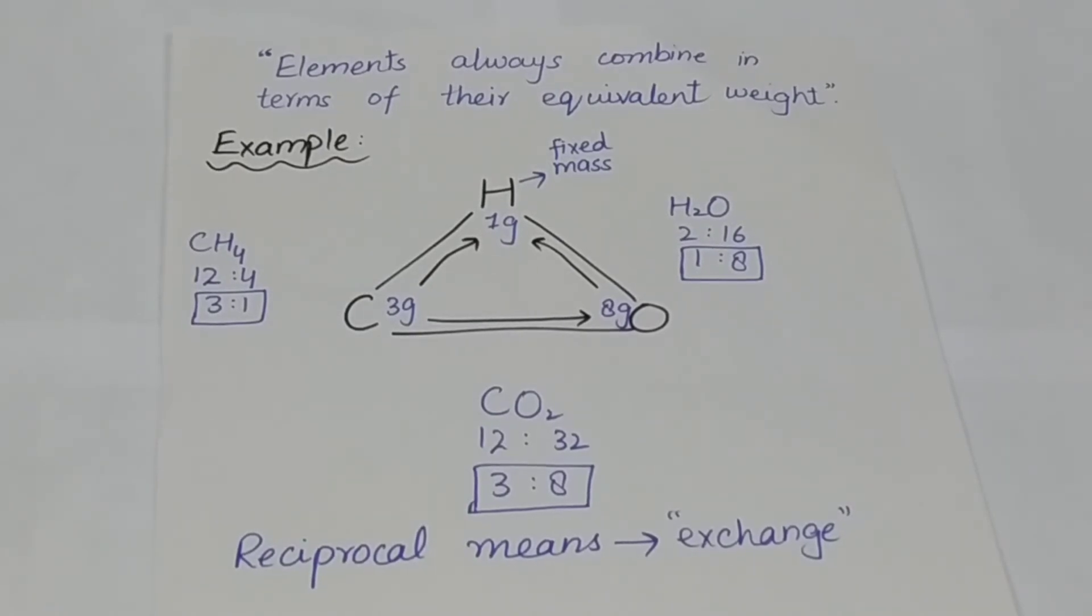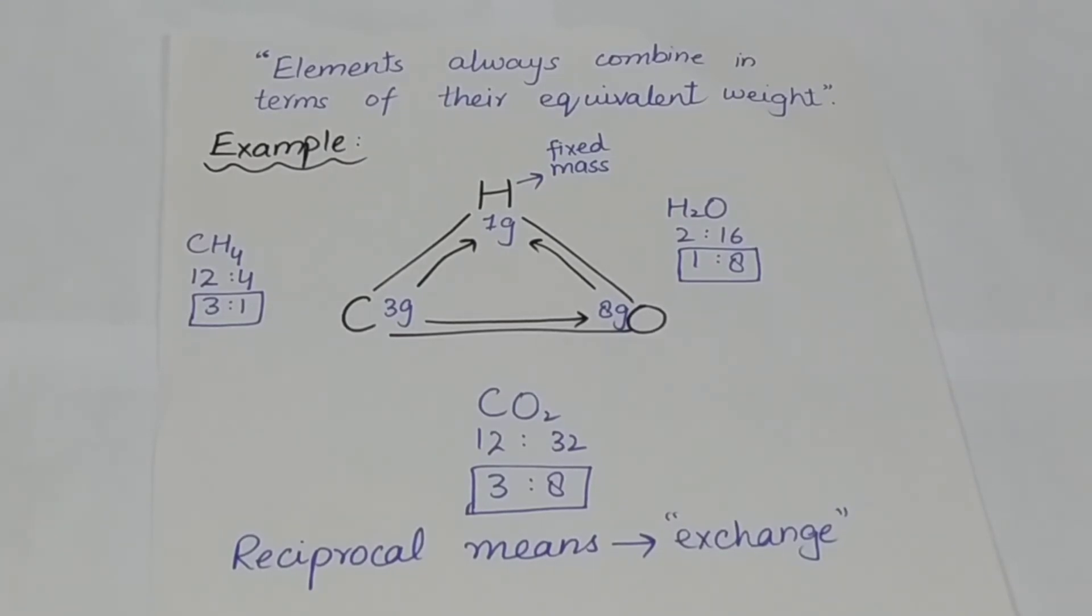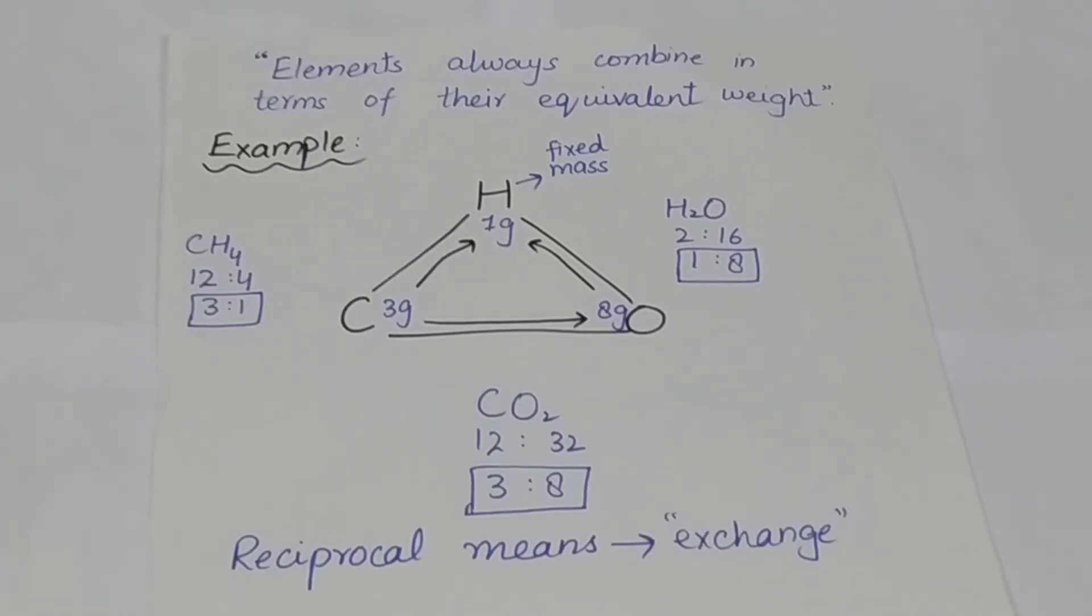In this law, we see that when 2 different elements are combined with 1 fixed mass of element, the ratio between carbon and oxygen will either be 3 ratio 8 or simple multiple of it.